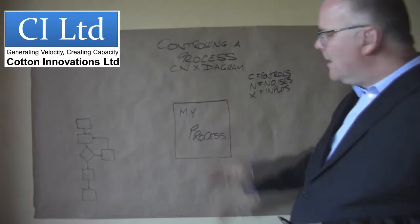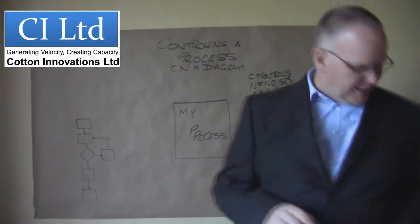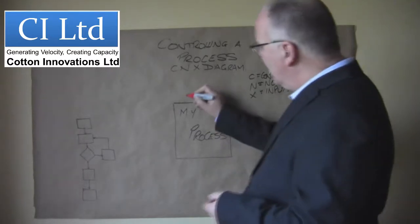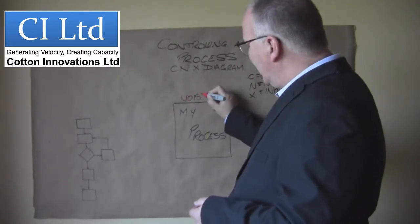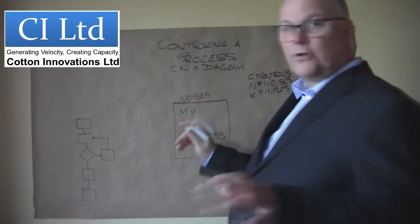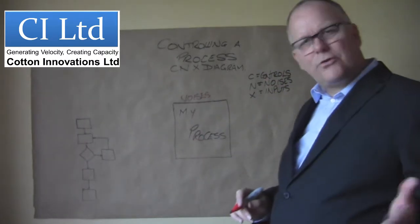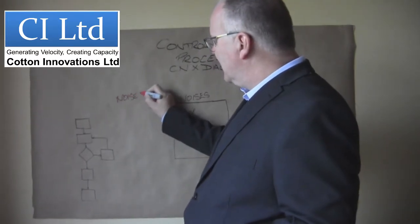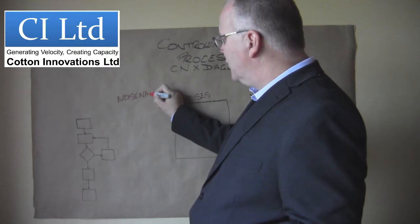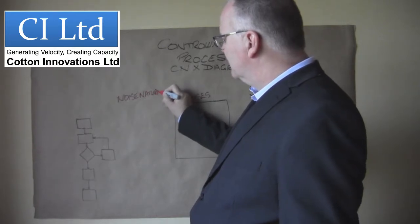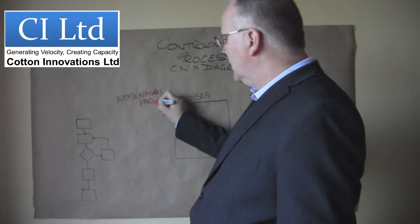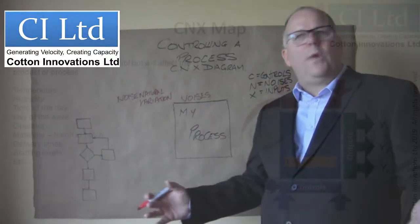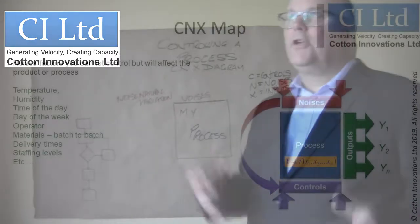So when we are mapping a process we want to look at these three things. We'll start off always by mapping the noises, and noises here are the things that you cannot control. All we mean by noise is a natural source of variation.